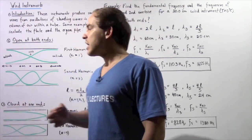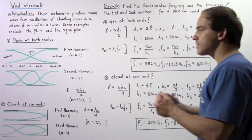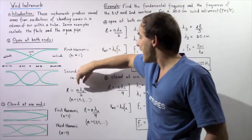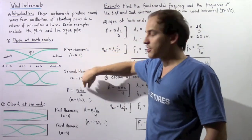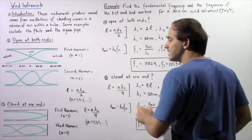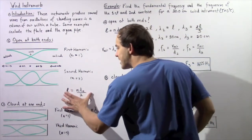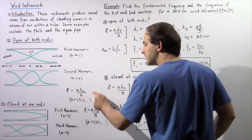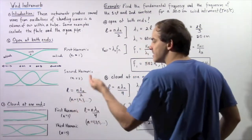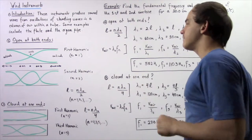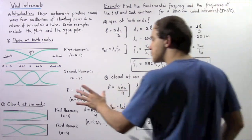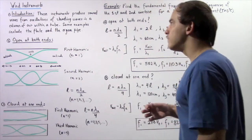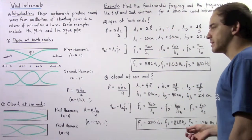The formula that relates the length of the column of air, the harmonic number, and the wavelength is: L equals n times lambda-n divided by 2, where n represents 1, 2, 3, 4, 5, and so on. Notice that this is the same exact formula as for a stringed instrument.